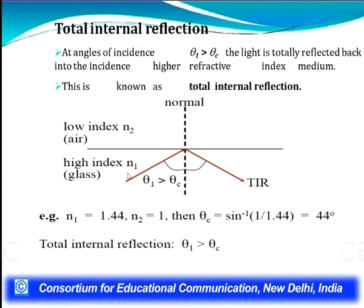For example, with n₁ = 1.44 (core) and n₂ = 1 (air), the critical angle θc = sin⁻¹(1/1.44) = 44°. This means total internal reflection occurs when θ₁ > 44°, so light will pass through the fiber at an angle greater than 44° to achieve total internal reflection.